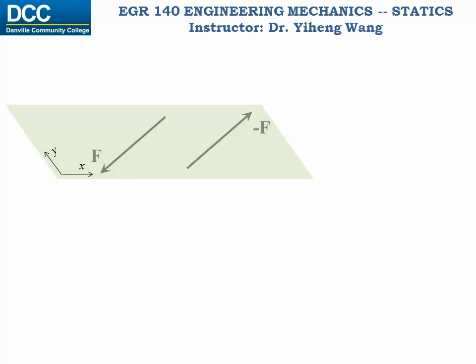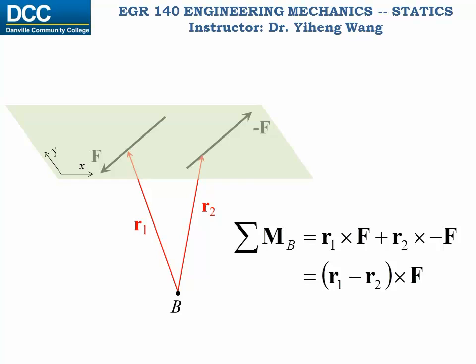Even if we calculate the total moment caused by these two forces about a point, say point B, that is not even in the current x-y plane, we can use the vector formulation to get that the total moment equals position vector R1 cross F plus position vector R2 cross negative F, which equals (R1 minus R2) cross F. After applying vector calculation, this still equals a moment with a magnitude of F times d pointing in the positive z direction — the same moment calculated about point O and point A earlier.